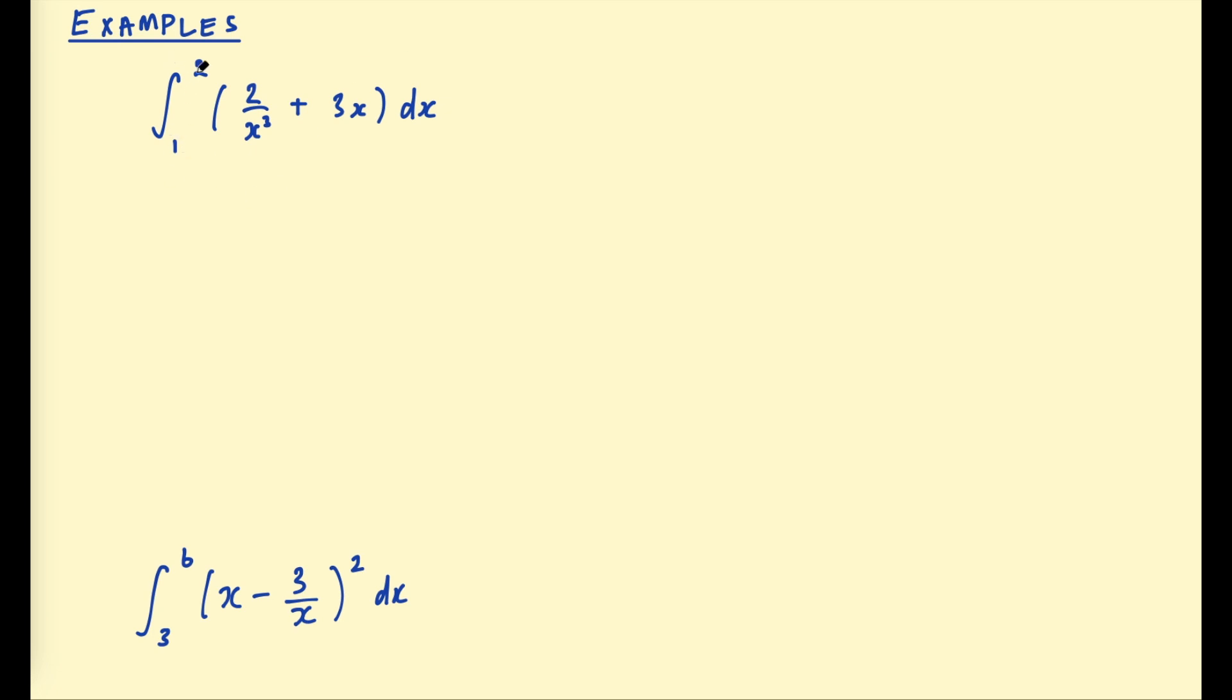Here we're looking for the definite integral from 1 to 2 of this function. And if you have a term that you can't exactly straight away see what the antiderivative is you can rewrite it. So just write it as 2x to the negative 3 plus 3x if that makes it easier for you. And then we find the antiderivative. So we add 1 to the exponent negative 2 and divide. So this becomes negative x to the negative 2. Adding 1 to x here is 2. Dividing by 2 we get 3 over 2 x squared. And we write the boundaries again on the right hand side.